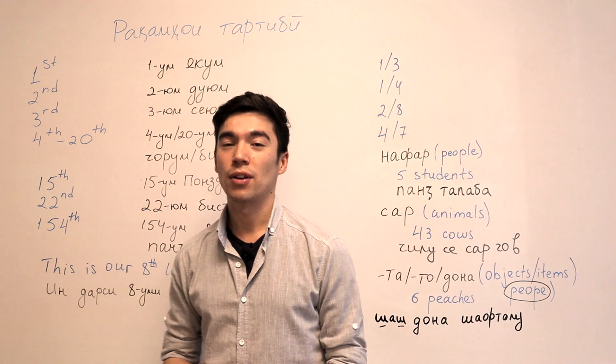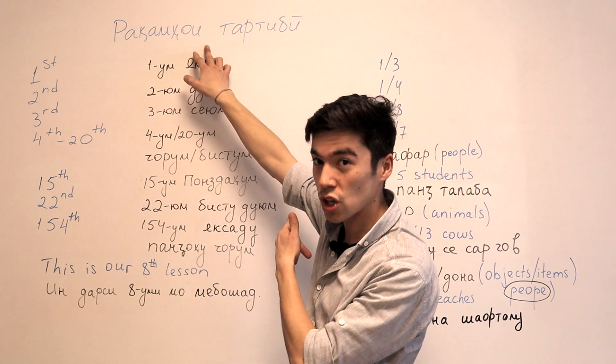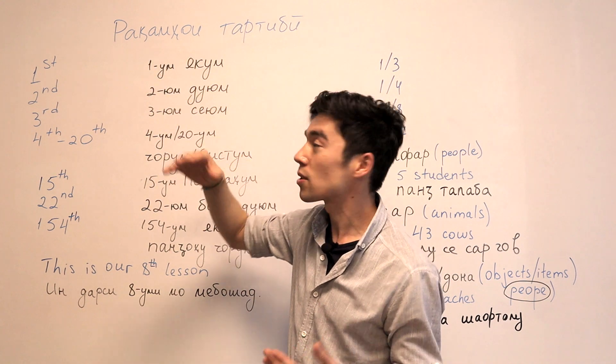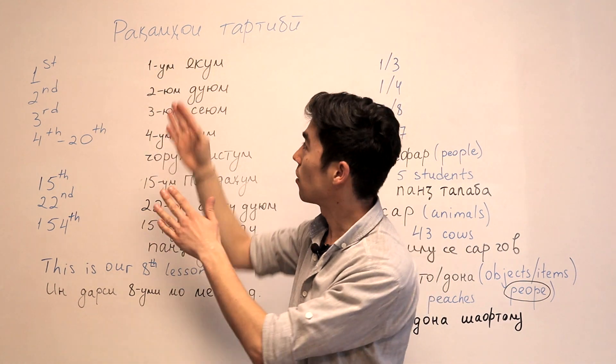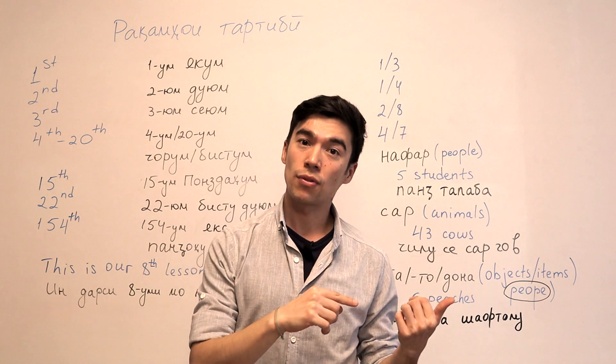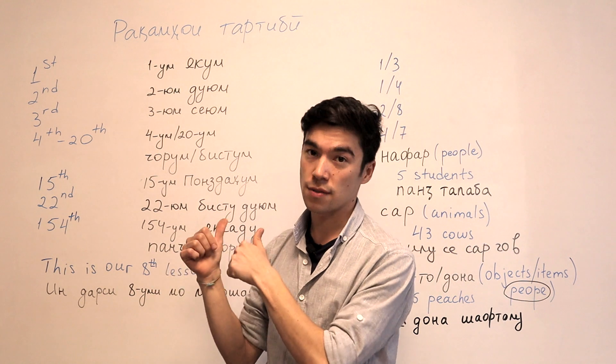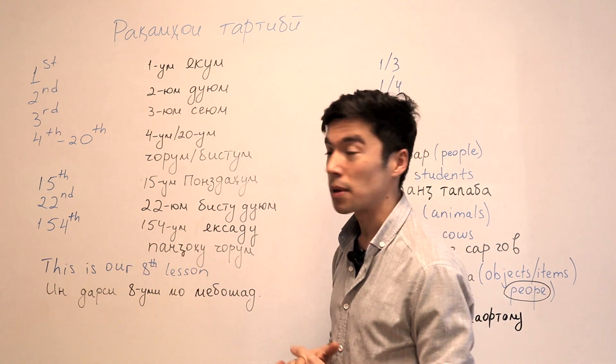In this class, we'll talk about the ordinal numbers. RAKAMHUYI TARTIBI. This is in Tajik. RAKAMHU means numbers and TARTIBI, ordinal numbers. And if you haven't watched our previous video about the numbers, I would recommend you to watch that first before watching this video.